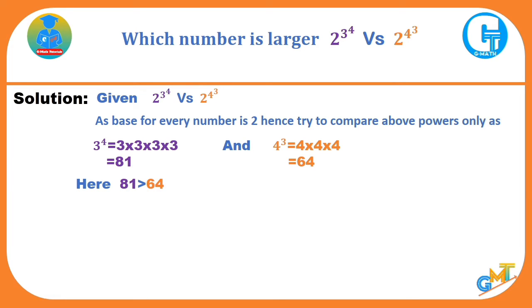Hence, 2 raise to 3 raise to 4 is also greater than 2 raise to 4 raise to 3. Hence the solution is 2 raise to 3 raise to 4 is greater than 2 raise to 4 raise to 3.